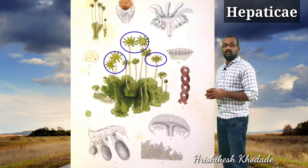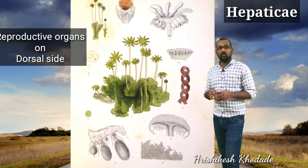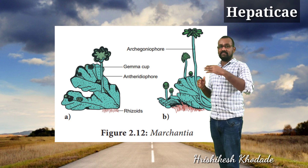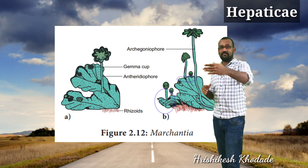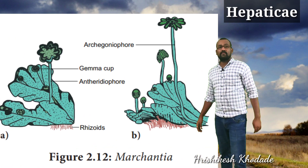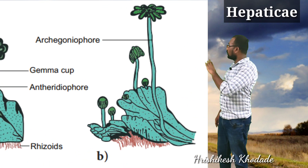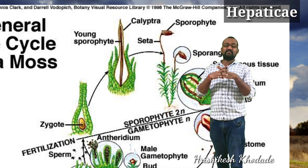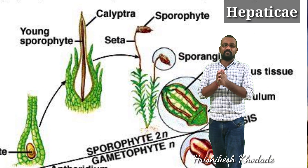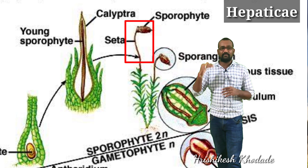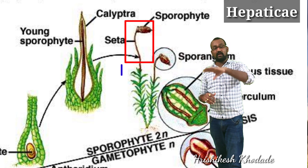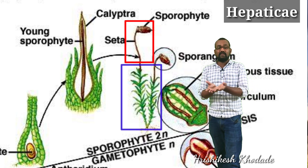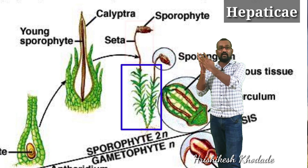Regarding the reproductive structure, as shown in the figure, the reproductive organs are often present on the dorsal side, sometimes at the terminal position — that is, at the tip region of the thallus surface. These reproductive organs produce male and female gametes. After union of gametes an embryo develops, and the embryo results in the sporophyte. These sporophytes are completely dependent upon the gametophyte — we can consider this a parasitic nature.